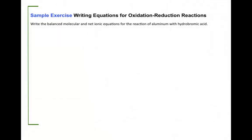In this example we're going to write the balanced molecular and net ionic equation for the reaction of aluminum with hydrobromic acid, an example of an oxidation-reduction reaction. We must write two equations, the molecular and the net ionic, for the redox reaction between a metal and an acid.